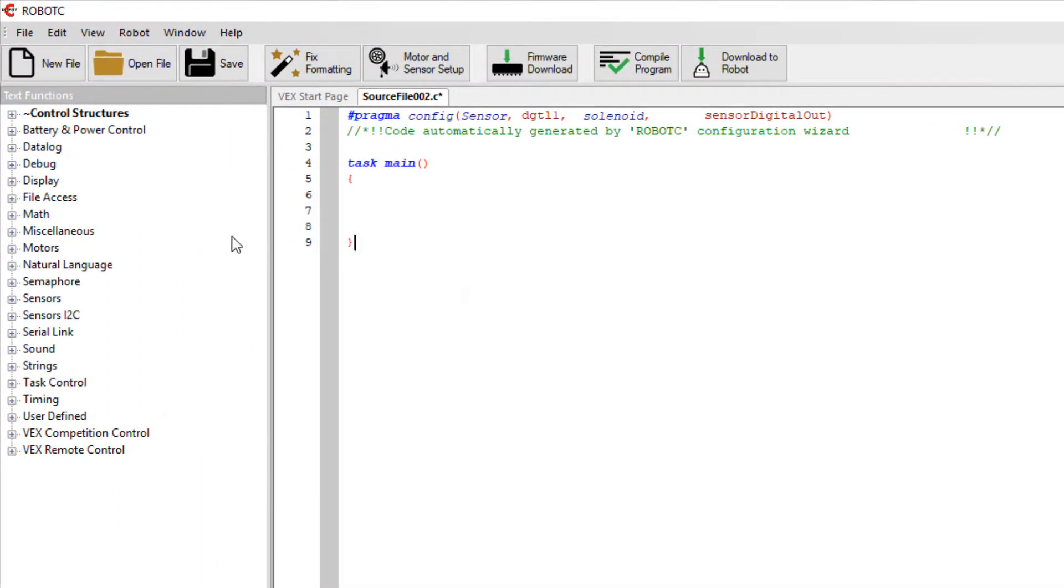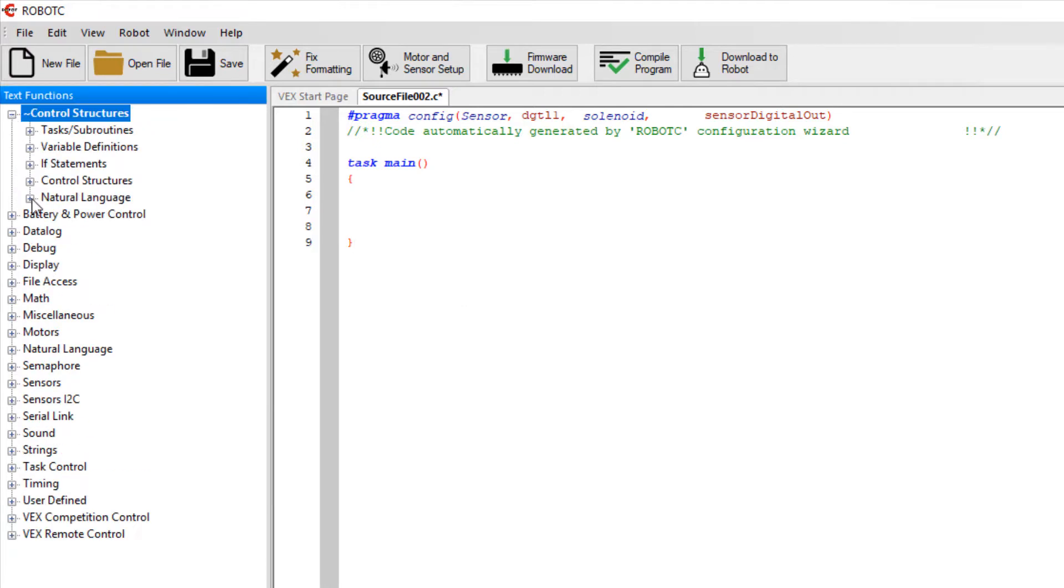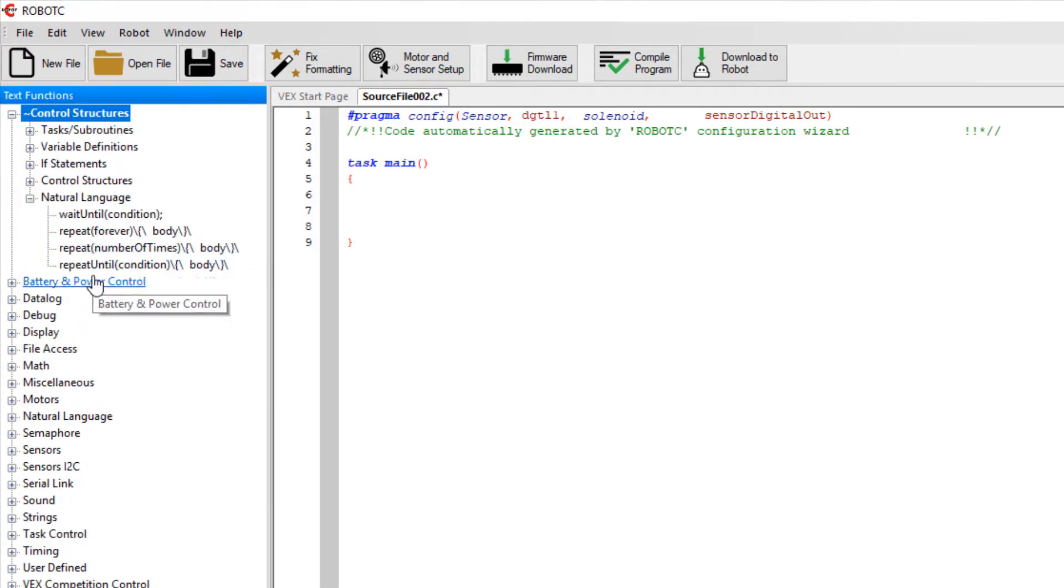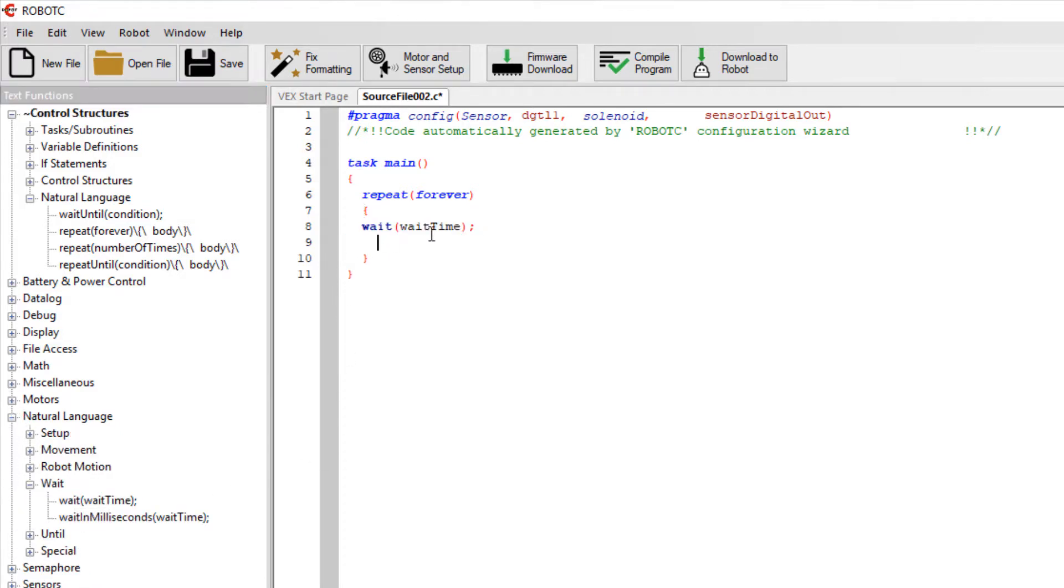So let's write up a real simple program. I'm going to go to control structures, natural language, and we'll do a repeat forever. And then we're going to replace the body with a couple of waits and some turning on and off the solenoid. So I'm going to come over to my natural language. I'm going to go to my waits, and we'll bring over a wait, and I think two seconds is going to sound good.